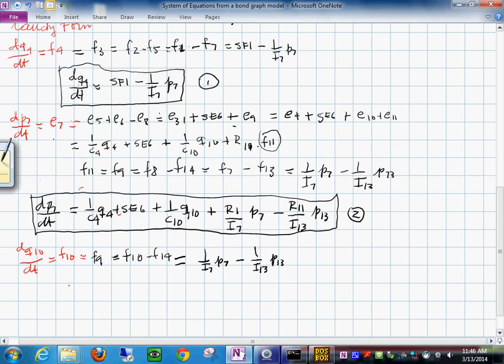And our third equation is going to be dq sub 10 dt is equal to 1 over i7 p sub 7 minus 1 over i 13 p 13. And that's our third equation.